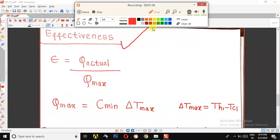Effectiveness. Effectiveness can be defined as the ratio of actual heat transfer to the maximum heat transfer. We can achieve maximum heat transfer if fluid is having lower heat capacity rate. Because of lower heat capacity rate we will get maximum temperature difference.